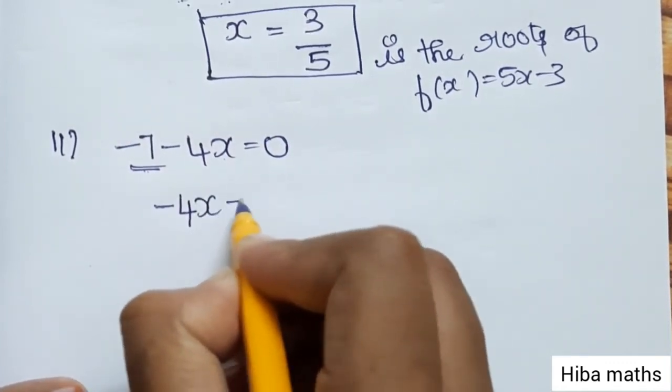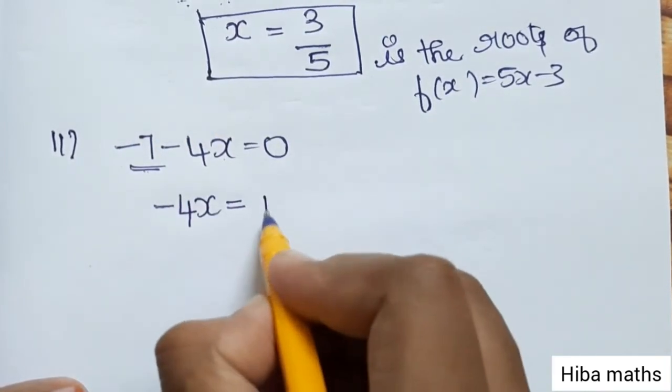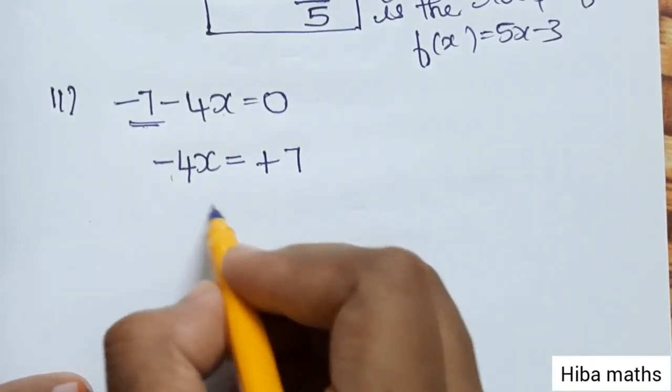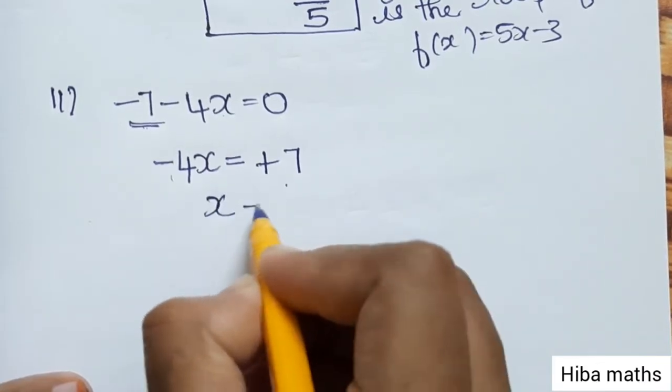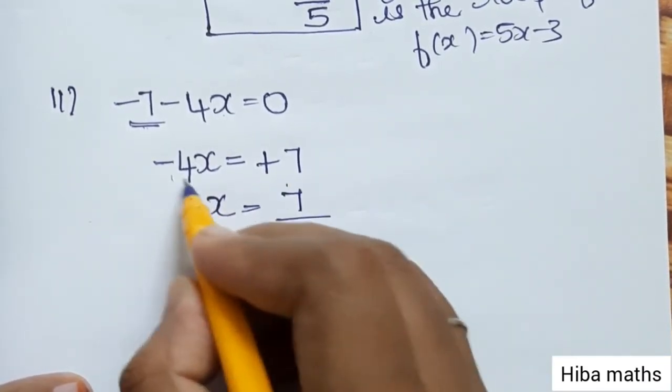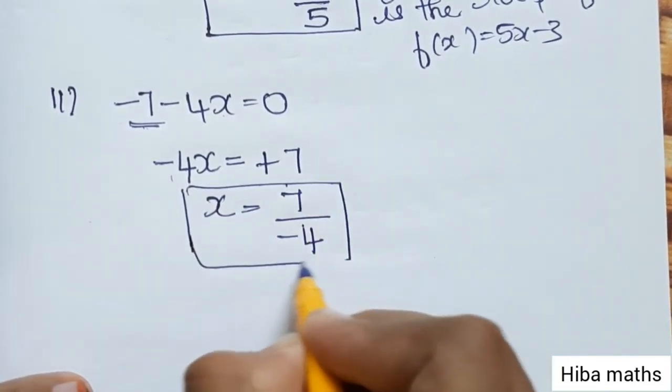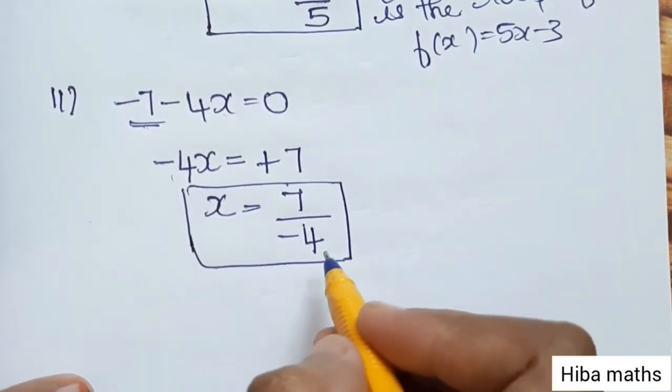-4x = +1. Now, minus 4 moves from numerator to denominator, multiplication to division. So, x value is 1/-4, or we can write it as -1/4.